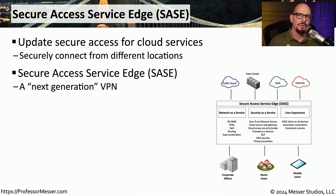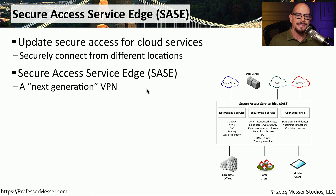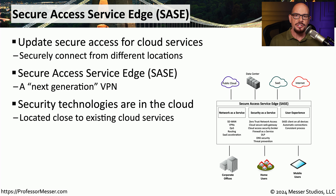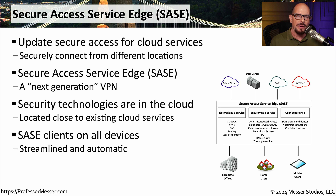One way that we can create this secure environment is through the use of SASE — Secure Access Service Edge. You could think of this as a next-generation virtual private network. This moves our security technologies into the cloud itself, very close to where the application data might be. A SASE client is installed on every user's device so that no matter what system they're using or where they happen to be, they're able to take advantage of this secure access service edge.